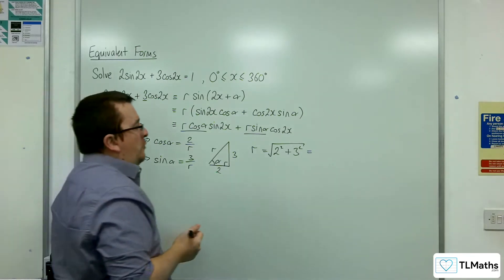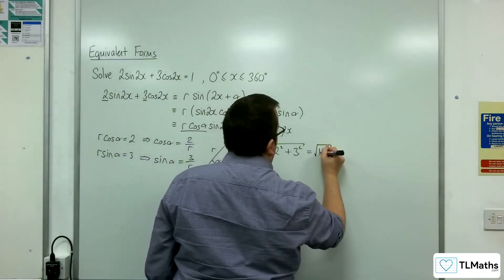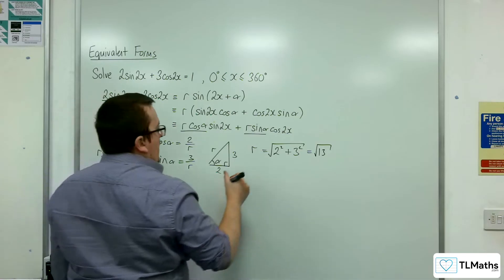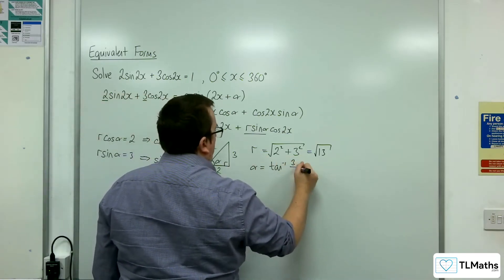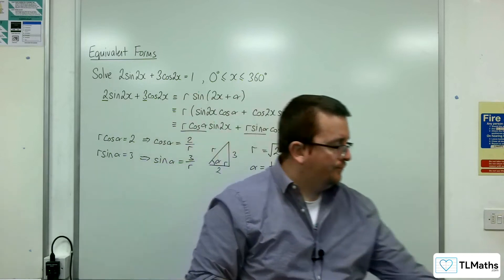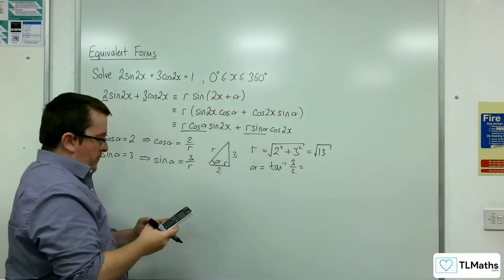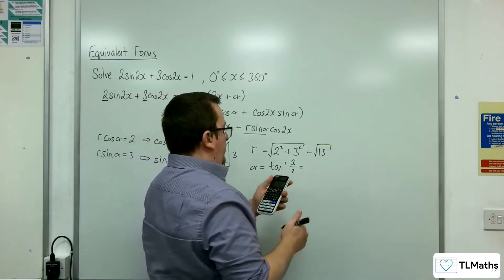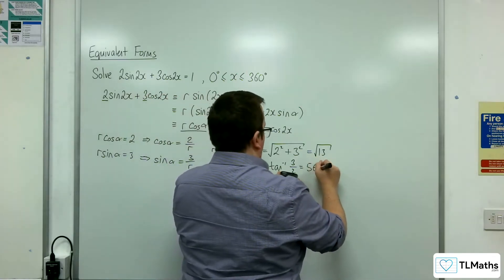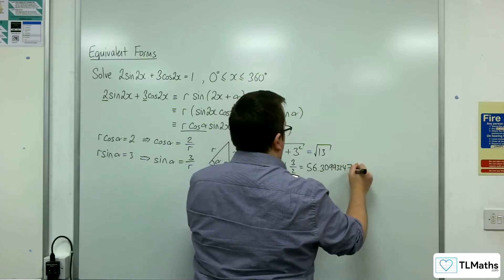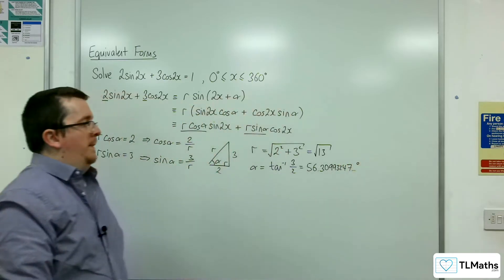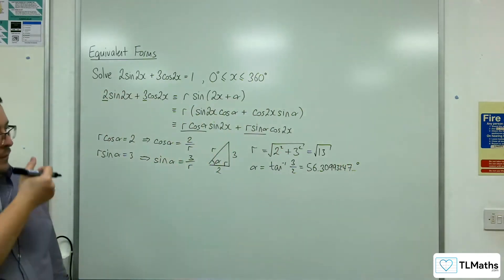And alpha is going to be the inverse tan of 3 halves. So inverse tan of 3 halves is 56.30993247 degrees.